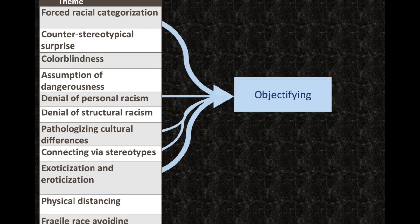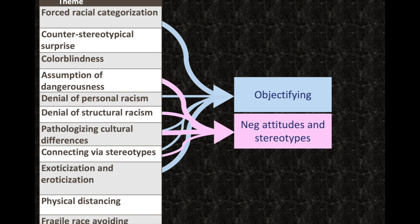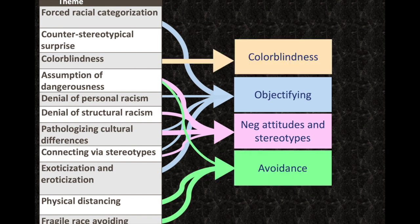So, objectifying. This is just a list of typical microaggressive themes. If you've been to various trainings, you may have seen lists like this. What Dan and I and our colleagues have done in our work is we've made this list smaller, looking at what drives microaggressive likelihood in people who commit microaggressions. We've essentially identified objectifying as one theme that is really prominent and, in our opinion, really starts the sequence of microaggressing and other biased behavior. The other themes we identified are negative attitudes and stereotypes, avoidance, and color blindness.